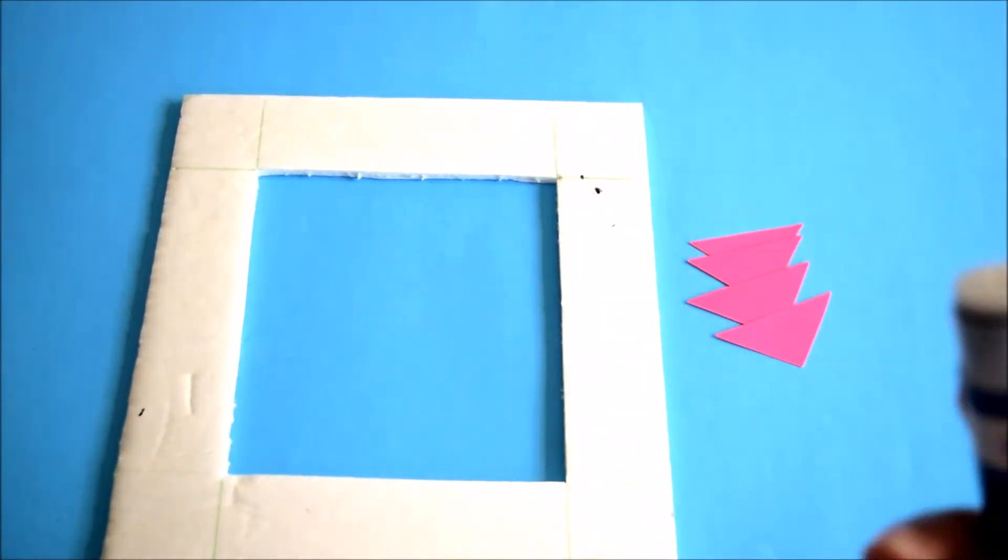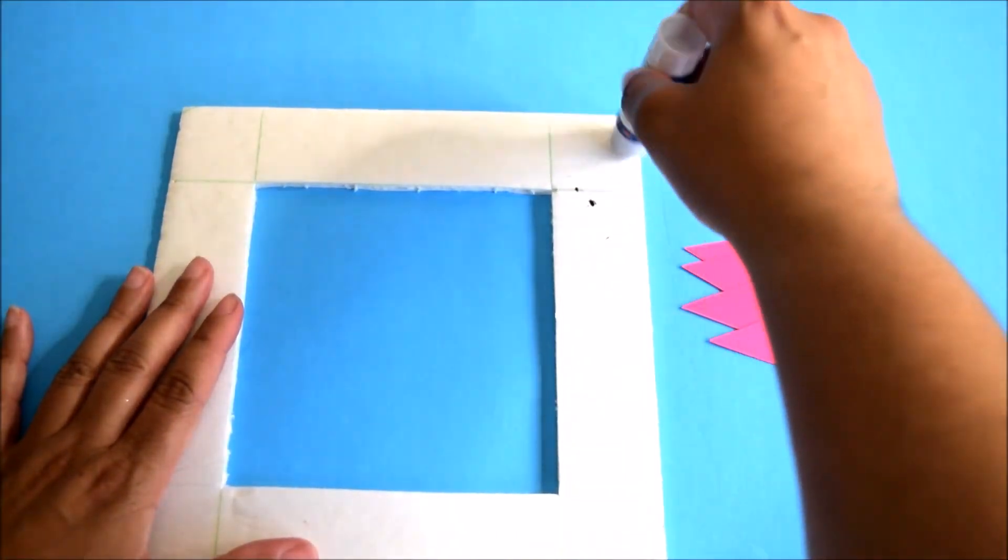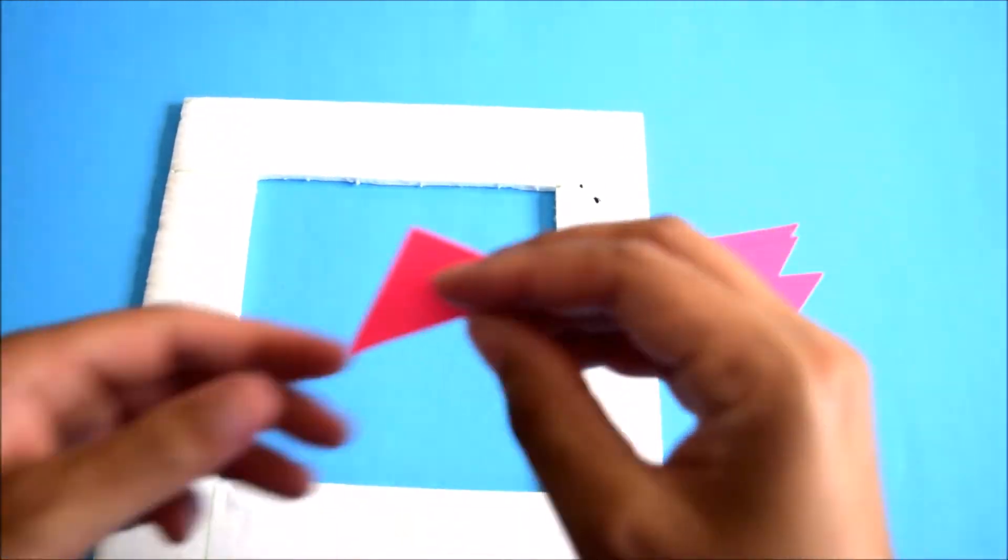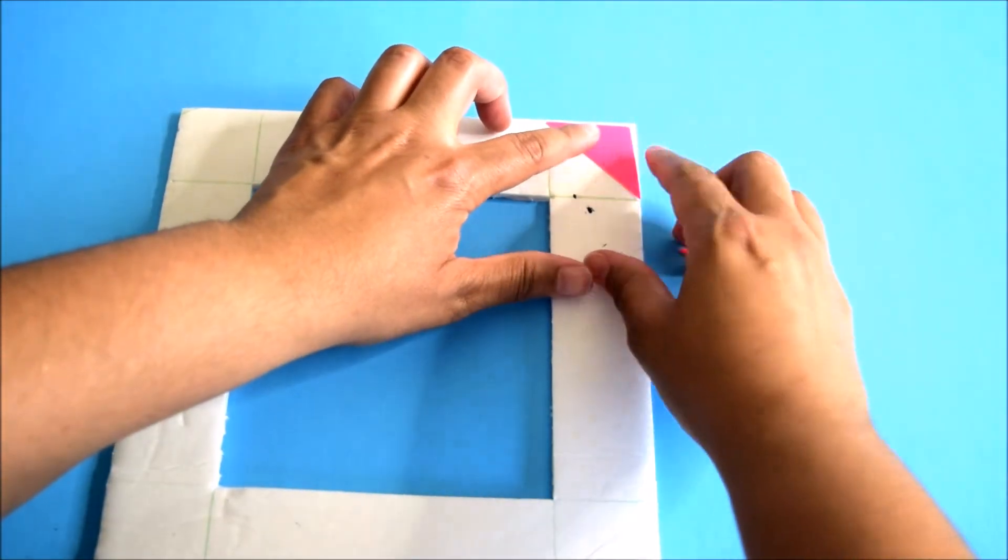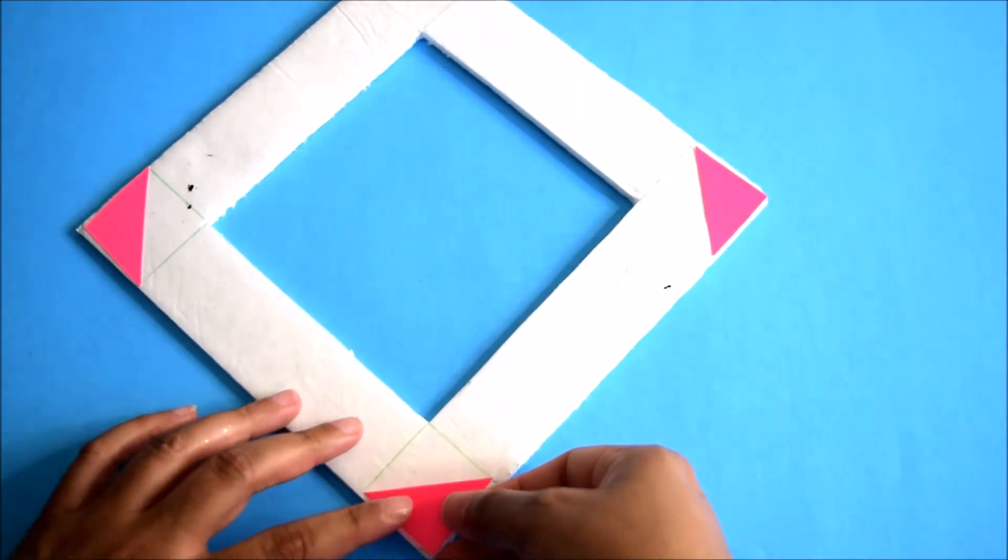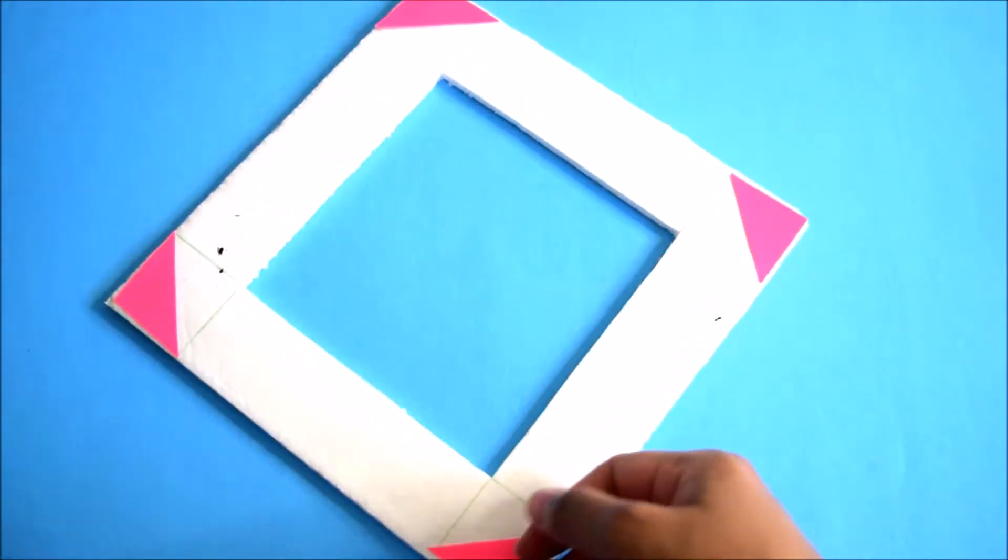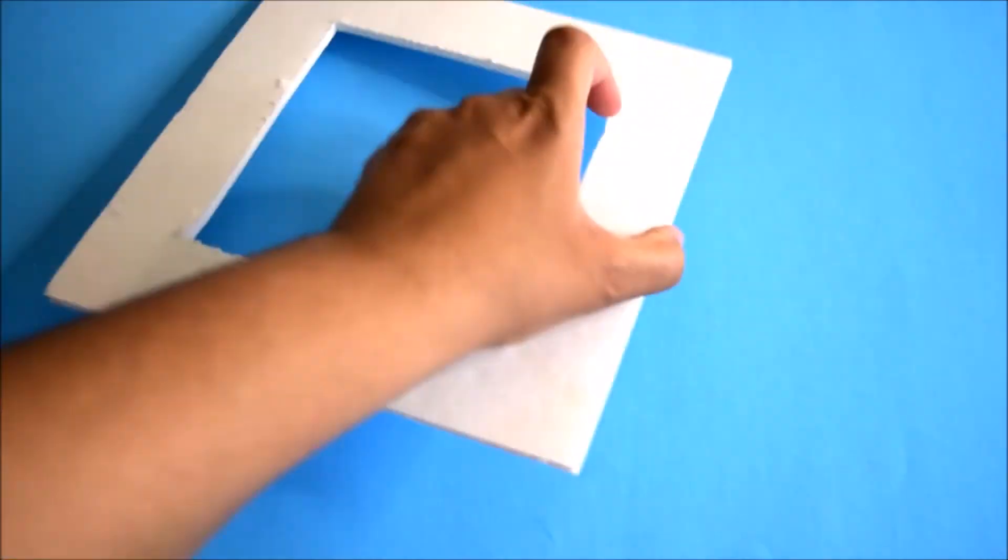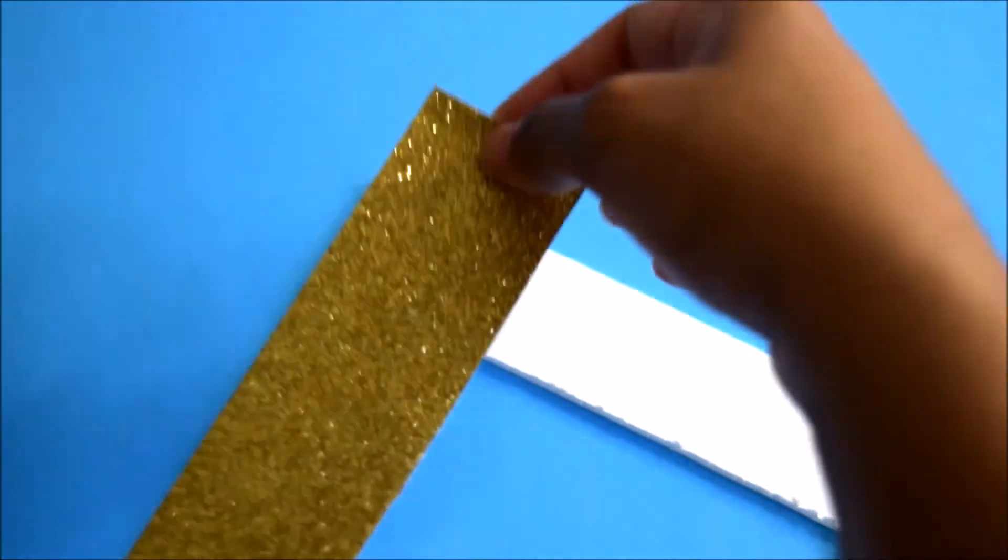On the back of the frame I take these triangle pieces of paper and basically this is going to secure your image. So you're just adding glue to the outer section of the triangle and you just slip your photo into the triangles and it'll hold it in place.